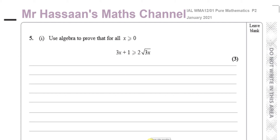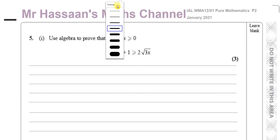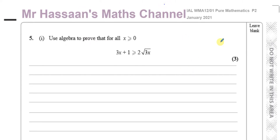Welcome back. I'm now on question number five from the P2 January 2021 international Edexcel paper. This is question five, which is all about proof — a new topic that wasn't in the syllabus previously. Before P2, in the old C2, it was not there.